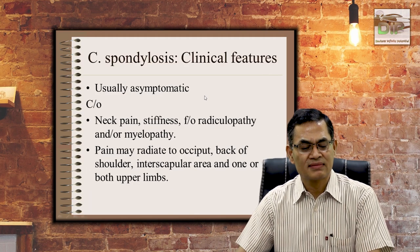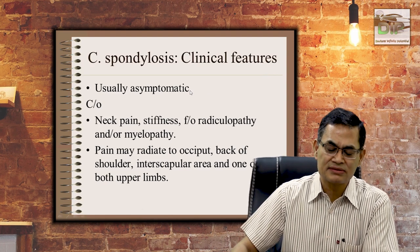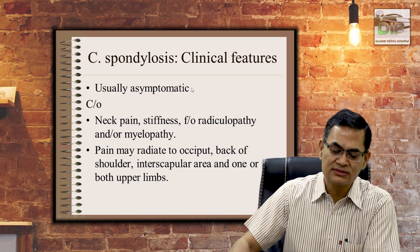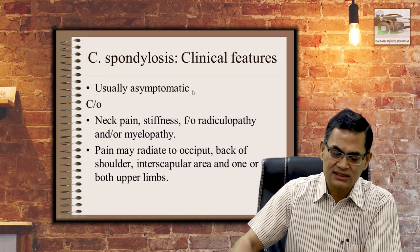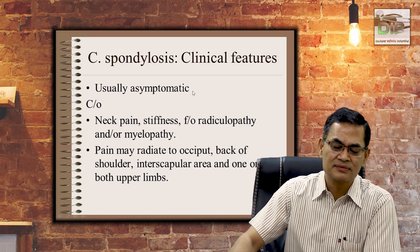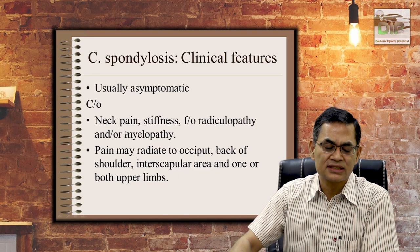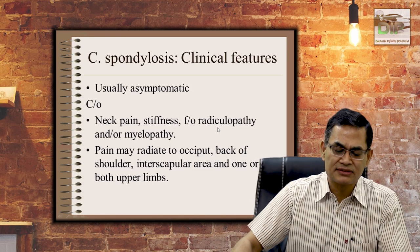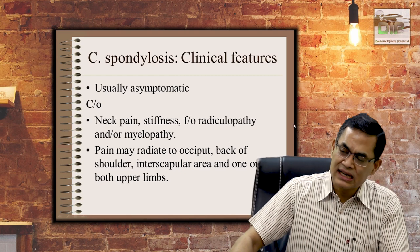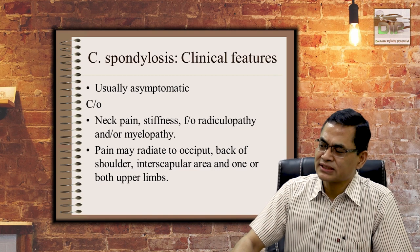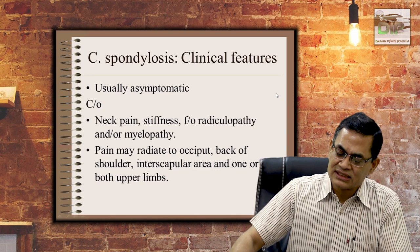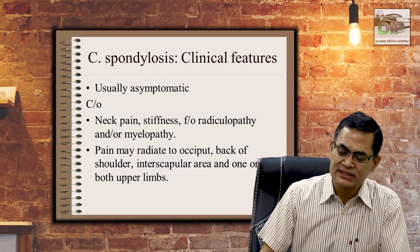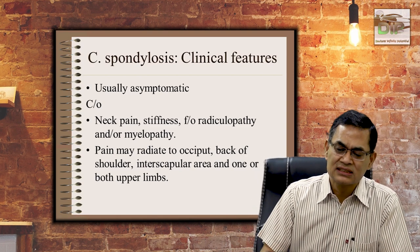Clinically, spondylosis is most often asymptomatic — X-ray features can be found in an elderly person with no complaints. But if symptomatic, the patient will complain of neck pain, stiffness, and may show features of radiculopathy or myelopathy. Pain may radiate to the occiput, back of the shoulder, interscapular area, or one or both limbs. I've seen patients with scapular pain where doctors X-rayed the scapula rather than the neck — so always examine the shoulder and C-spine as well.